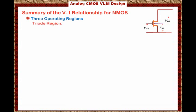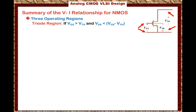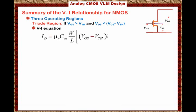The second region is the triode region. The conditions are: VGS is greater than the threshold voltage — meaning the device is on — and VDS is less than VGS minus the threshold voltage, i.e., less than the overdrive voltage. If this condition occurs, you are in the triode region, and the voltage-current relationship is: ID = μN·COX·(W/L) × [(VGS − Vth)·VDS − ½·VDS²].